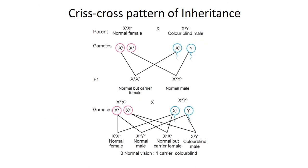In criss-cross inheritance, females are normal and the male is color blind. In the F1 generation, all males are normal and all females are normal but carriers. When the carrier female marries a normal person, in F2 they produce one normal female, one normal but carrier female, one normal male, and one color blind male — that is three normal-visioned and one color blind.